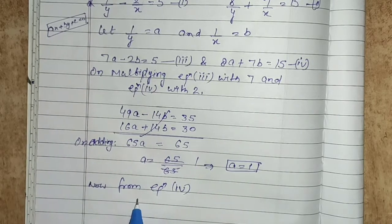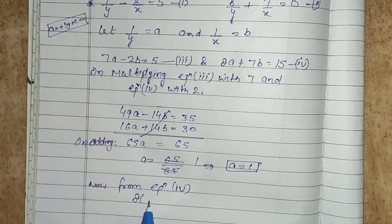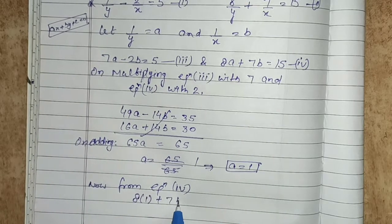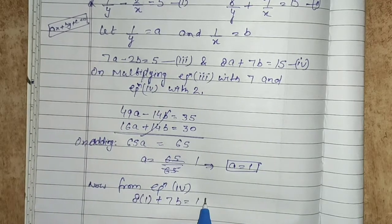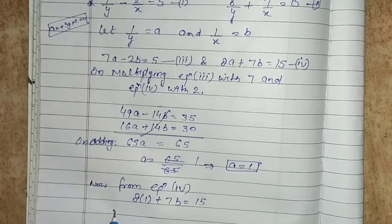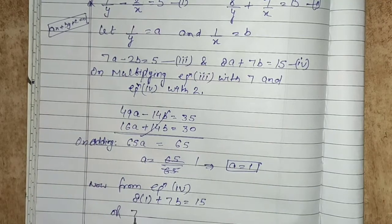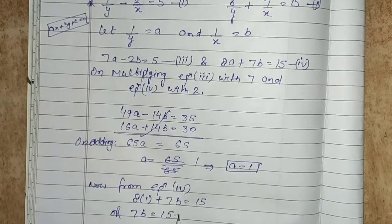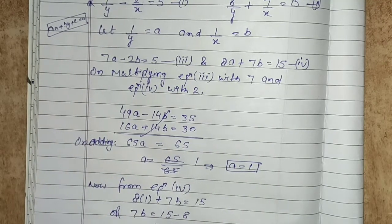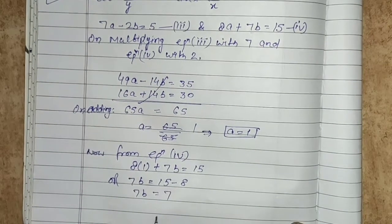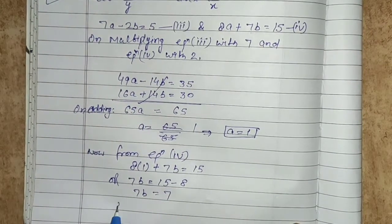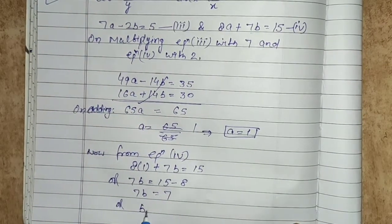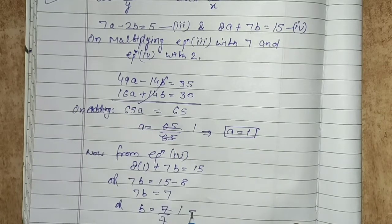From equation 4, substituting a equals to 1: 8 into 1 plus 7b equals to 15. So 7b equals to 15 minus 8, which gives 7b equals to 7. Therefore b equals to 7 by 7, that is 1.